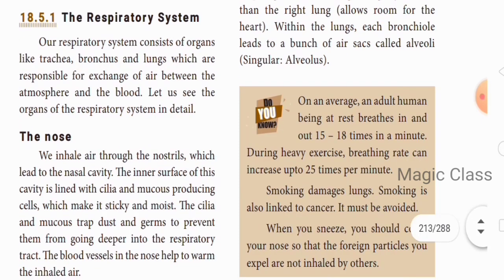The respiratory system consists of organs like the trachea, bronchus, and lungs, which are responsible for the exchange of air between the atmosphere and the blood. Let us see the organs of the respiratory system in detail. I am going to show you a pictorial representation — you can open the book and I will explain with that.